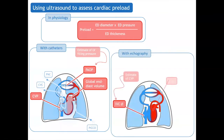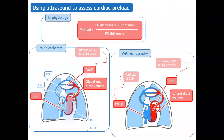With echocardiography, which is what we are going to speak about today, we can estimate on the right side the IVC diameter, which is an estimation of the central venous pressure. At the left side, we can estimate the LV filling pressure with the E over E' ratio, and we can also assess the LV end-diastolic volume. So in practice, echocardiography provides three assessments of cardiac preload.